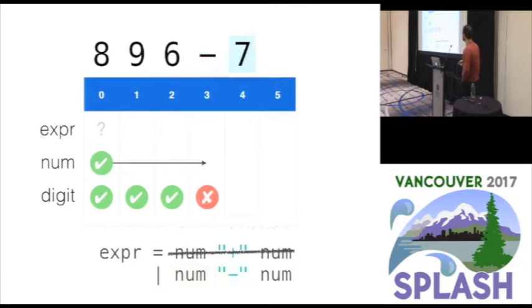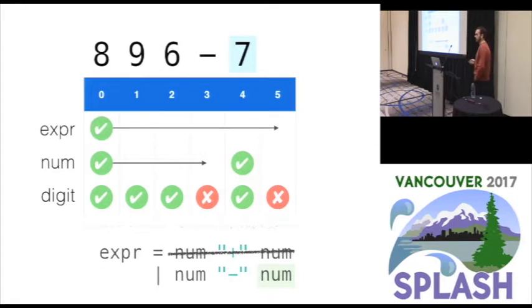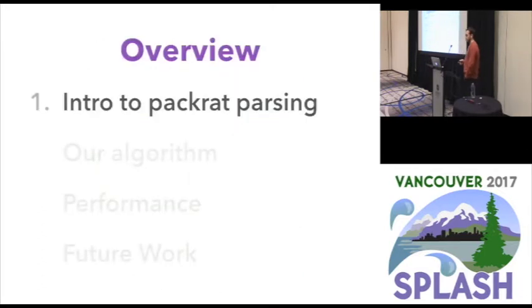So we just update the position to 3 and continue parsing. We'll parse the minus. We want to parse another num which is a digit and then a failed application of digit. Num succeeds and finally we succeed in parsing the arithmetic expression and this consumes the whole input.